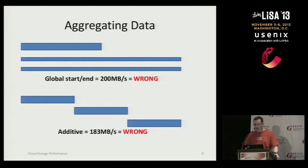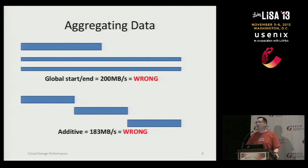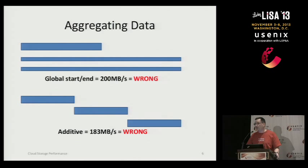The second approach, more commonly seen, is to fire up multiple streams, measure each separately, and add the results. So if thread one completes in one-third of the time, thread two in two-thirds, and thread three in the full time, you add one-third plus one-half plus one. You might have a system only capable of 100 MB/s, but due to this methodological error you're adding up numbers to get 183, which is also very wrong.